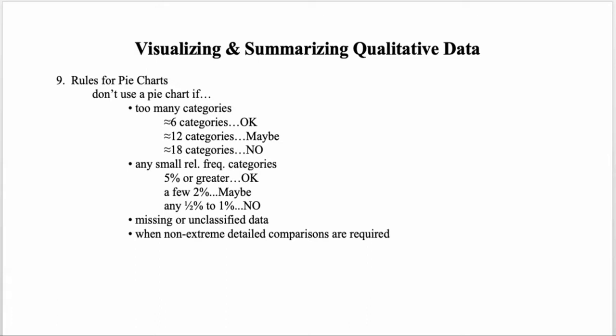Additionally, if you have missing or unclassified data — meaning you're not presenting an image of the entire whole broken into categories — you wouldn't want to use a pie chart. Use a pie chart when it's appropriate to the comparison you're presenting. If you're trying to show categories that are relatively close in frequency, a bar graph may be better. If your emphasis is on showing clear distinctions between high- and low-frequency categories, the pie chart might be appropriate.